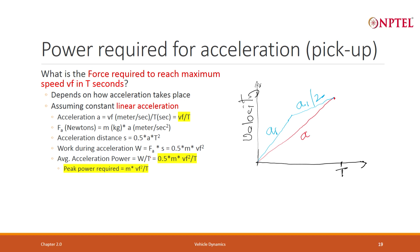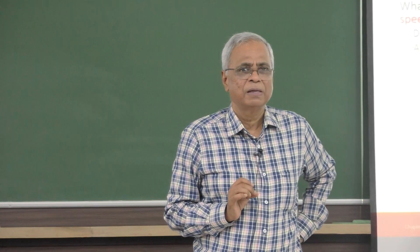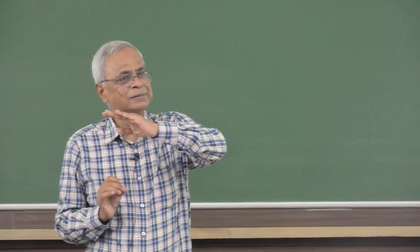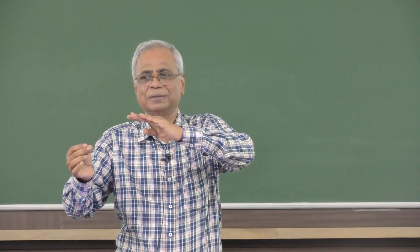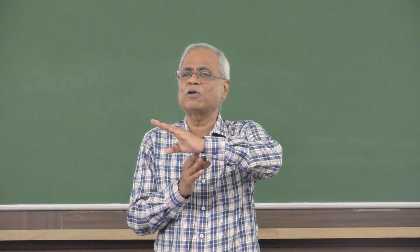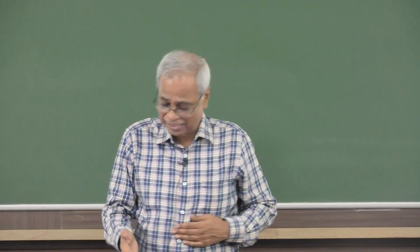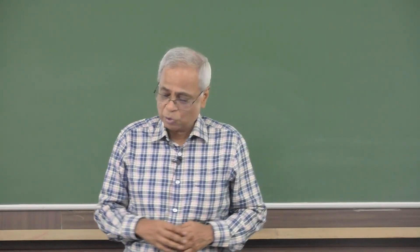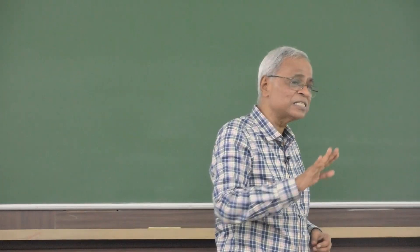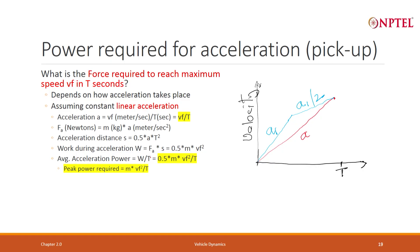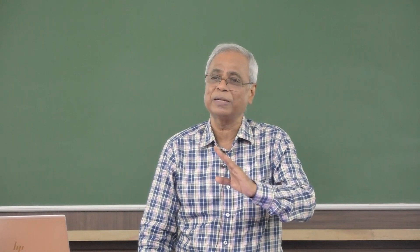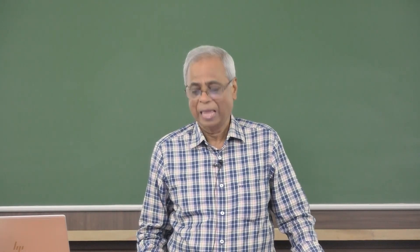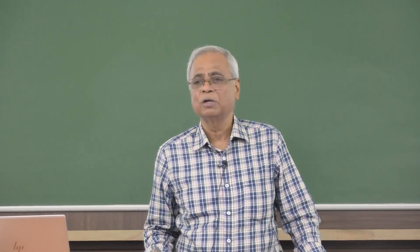Do I really need to accelerate linearly? Power requirement always has an extra velocity term, while force may be constant. So in the beginning, my power requirement is small; at the end, my power requirement is very large — that is why peak power is mVf² divided by t. Can I actually go at higher acceleration in the beginning? Yes, because my power requirement will be small when velocity is small, and later travel at lower acceleration when velocity is higher.